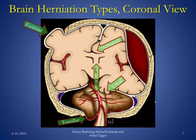We'll start with subfalcine herniation, also termed midline shift. On this image, you can see brain herniating inferior to the falx. The falx is a relatively rigid structure and cannot be displaced. However, brain inferior to that is much more easily displaced, so herniation usually occurs in this location. A complication of subfalcine herniation is compression of the anterior cerebral arteries, which would result in infarction of the anterior cerebral artery distribution.